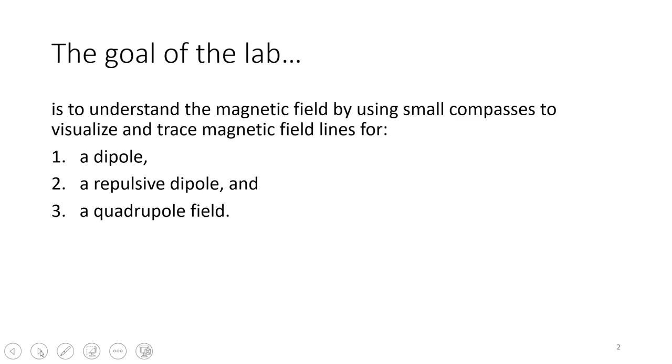The goal of the lab this week is to understand the magnetic field by using small compasses to visualize and trace the magnetic field lines for three different things. We're going to look at a dipole, which is a north and a south end of a magnet. We're going to look at a repulsive dipole, which would be two south ends or two north ends of a bar magnet, and we're going to look at a quadrupole field.